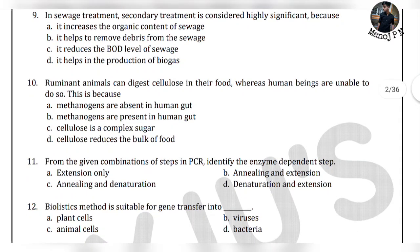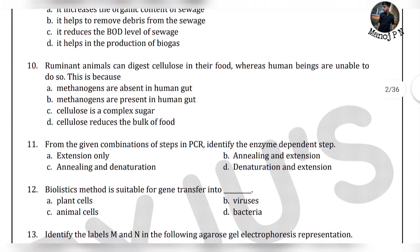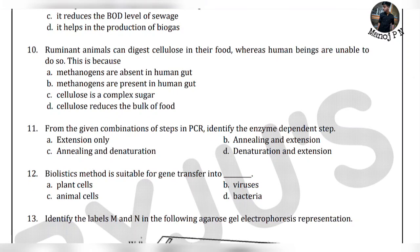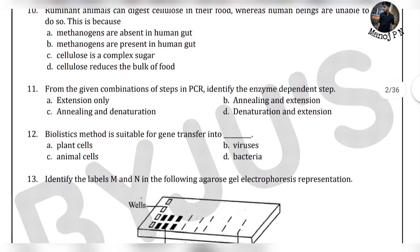Look at the 10th question: ruminant animals can digest cellulose in their food, whereas humans are unable to do so. Why? Because methanogens are absent in the human gut. In the human gut, methanogens are zero. Methanogens are the bacteria that produce methane during the breaking down of substances like cellulose. So that is option A.